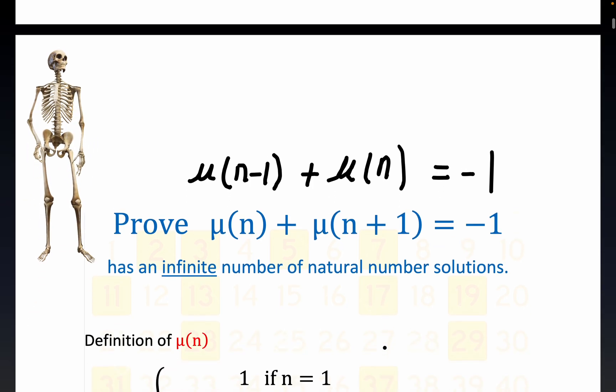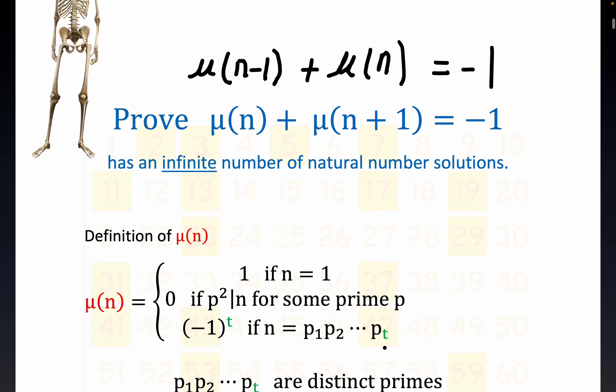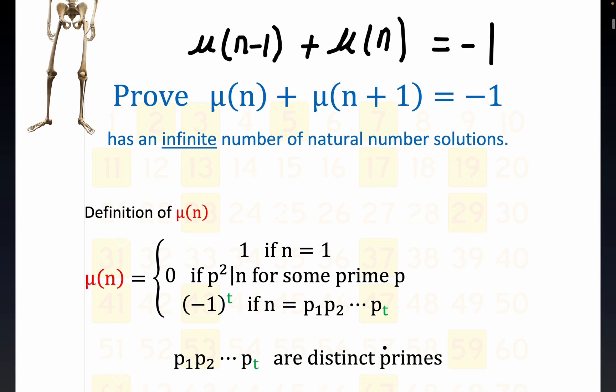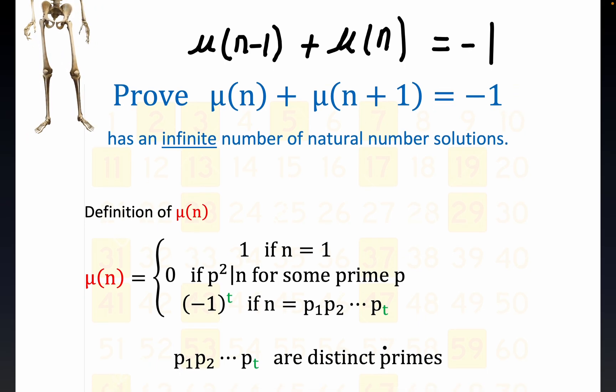We're trying to show there's an infinite number of natural number solutions, meaning positive integer solutions. Let's take a look at the definition of the Möbius function. It looks pretty strange until you take a little bit of number theory, but it's a trivalent output function. You can get 1, 0, or minus 1 depending on if you have an odd or even number of distinct prime divisors in your natural number.